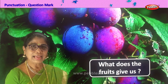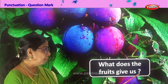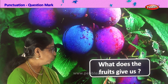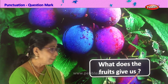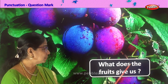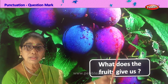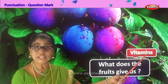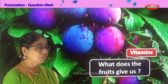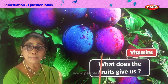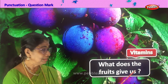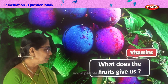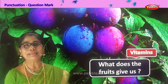Let's look at the sentence, and if it is asking a question, we must put a question mark. The sentence begins with a capital letter. What does the fruit give us? It's a question, so we put a punctuation question mark at the end. What does the fruit give us? The fruit gives us vitamins. If you eat all the fruit, you get a lot of vitamins. 'W' — capital letter — the first word in the sentence. The sentence is asking a question, so we put a question mark at the end. Fruit gives us vitamins. Good.